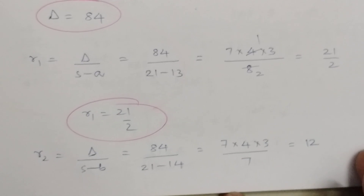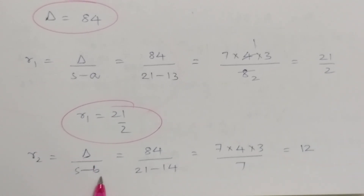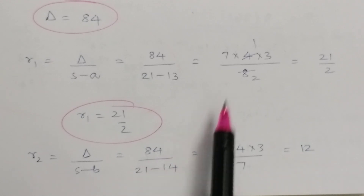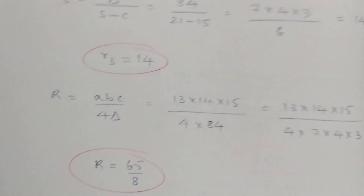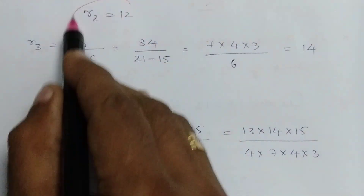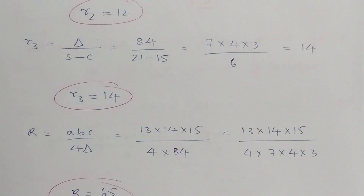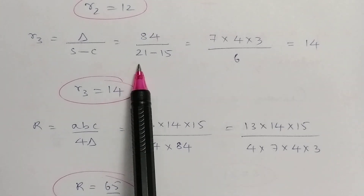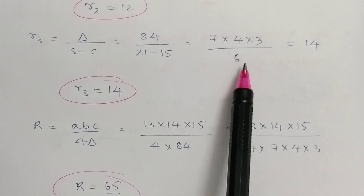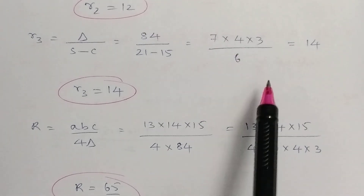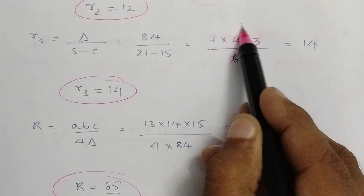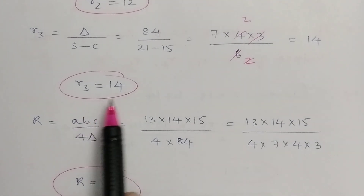Now r2. The formula is r2 = delta / (S − b) = 84 / (21 − 14) = 84 / 7. Writing 84 as 7 × 4 × 3: the 7s cancel, leaving 4 × 3 = 12. Therefore r2 = 12. Now r3 = delta / (S − c) = 84 / (21 − 15) = 84 / 6. Writing as 7 × 4 × 3 / 6: 3 and 6 simplify, giving 7 × 2 = 14. Therefore r3 = 14.